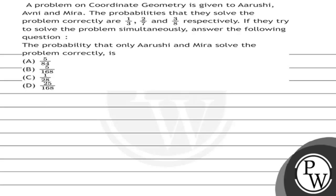The question says that a problem on coordinate geometry is given to Aryoshi, Avani, and Mira. The probability that they solve the problem correctly are 1/3, 2/7, and 3/8 respectively. If they try to solve the problem simultaneously, we have to find the probability that only Aryoshi and Mira solve the problem correctly, then check which option the answer satisfies.